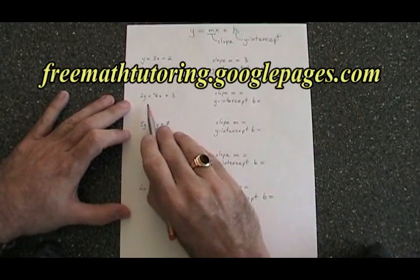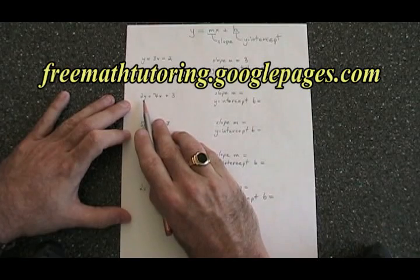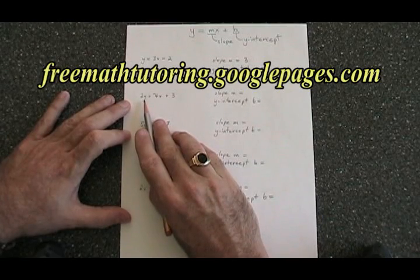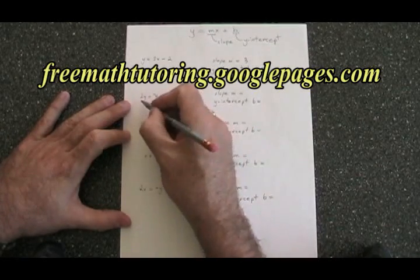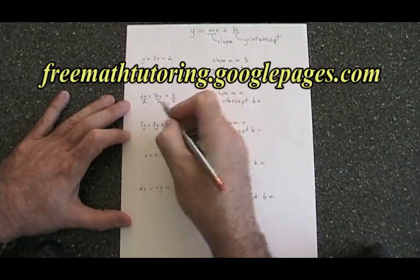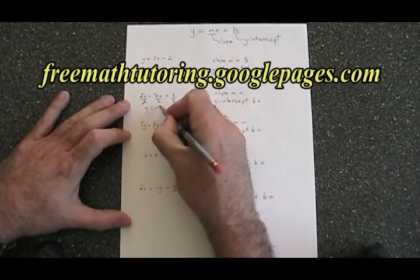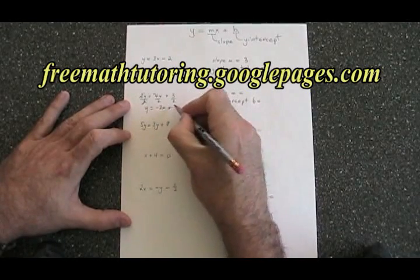In the second equation, y is not isolated yet. It has a 2 with it. If y is being multiplied by a 2, we need to divide everything in the equation by 2. And this simplifies to y equals negative 2x plus 3 halves.